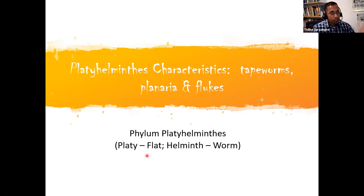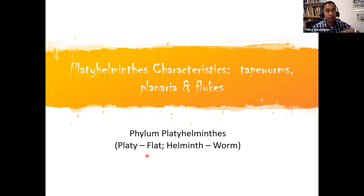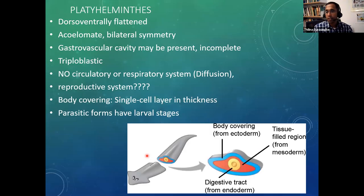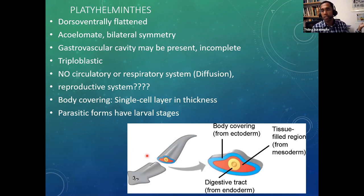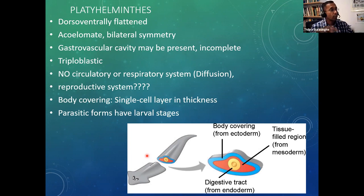Now let's talk about the first group: Platyhelminthes. 'Platy' means flat, 'helminth' means worms. This group includes tapeworms, planarians, and flukes. They are ventrally flattened creatures and they don't have a coelom — they are acoelomate. They don't have a body cavity; if they had one, they would not be flattened.